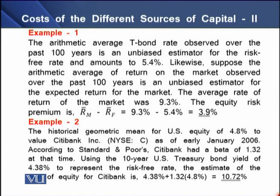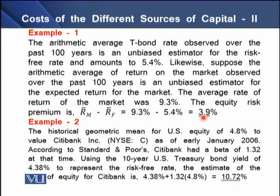For example, using arithmetic mean: T-bonds data over the past 100 years shows an average of 5.4%, and the arithmetic mean on the market return RM is 9.3%. To determine the equity risk premium, we take the difference between market return (9.3%) and risk-free rate (5.4%), which gives 3.9%. This 3.9% is the equity risk premium determined using arithmetic means.